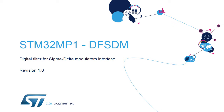Hello, and welcome to this presentation of the STM32 Digital Filter for Sigma Delta Modulators Interface. It covers the features of this interface, which behaves like an analog-to-digital converter, or ADC, with an external analog part and configurable speed-versus-resolution ratio.